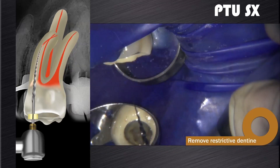In some cases the inability to negotiate the root canal system — especially, for instance, the MB2 canal in a maxillary molar — is due to the presence of restrictive dentine at the orifice of the canal, causing the file not to enter with straight-line access. A very effective instrument that can be used to remove restrictive dentine at this level is the XX instrument from the ProTaper Universal system.